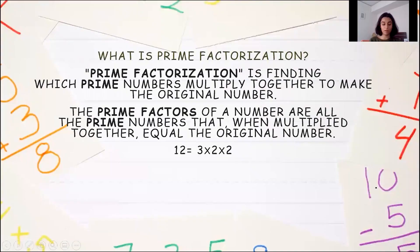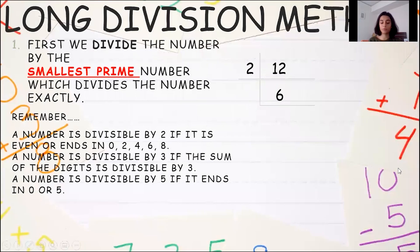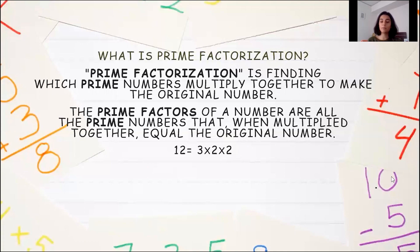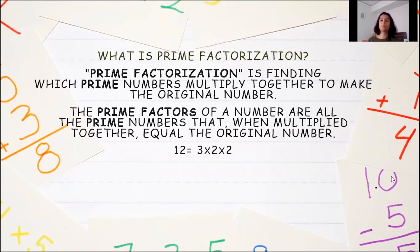Let's move on to understand what prime factorization is before we go step by step. Prime factorization is finding which prime numbers multiply together to make the original number. When you do the prime factorization of a number, the prime numbers you find, when multiplied together, give you back the original number. The prime factors of a number are all the prime numbers that when multiplied together equal the original number.